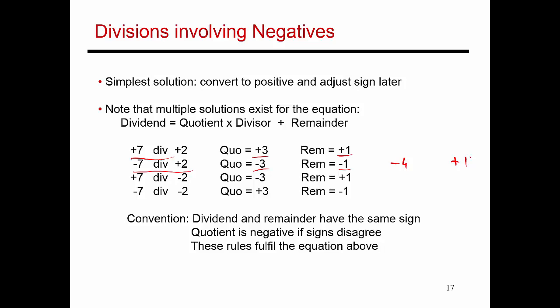So we need a convention to figure out what those values are going to be so that we can pick one of these many possibilities. We are going to assume that the remainder has the same sign as the dividend.